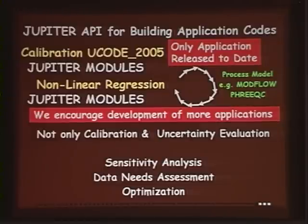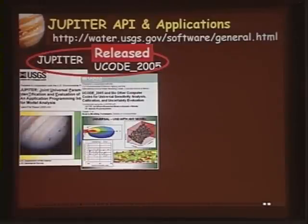JUPITER is ready to make codes for sensitivity analysis, data needs assessment, and optimization. Chung-Mao Jang is working with a student to add an optimization algorithm to the JUPITER family, so all the codes in the JUPITER family can be downloaded and are available to the public.